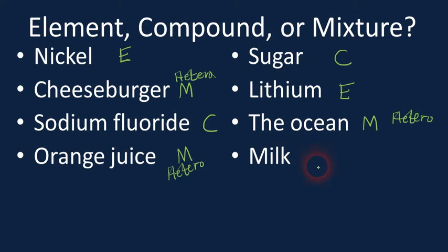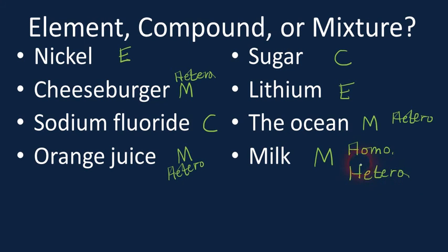What about milk? It's also a mixture. The milk you buy at the store is actually homogeneous — it's been homogenized. But if you were to take milk straight out of a cow, raw milk, it would actually be heterogeneous. So it could be either one depending on which milk you're thinking of. At this point, you should be able to determine if pretty much anything is an element, a compound, or a mixture.